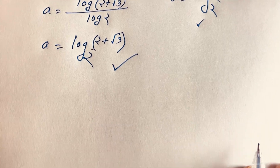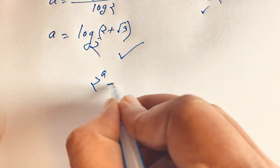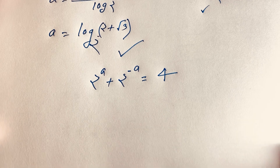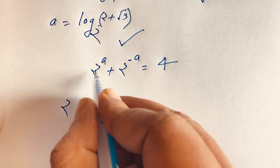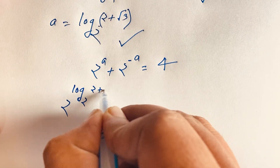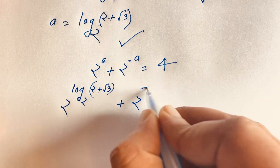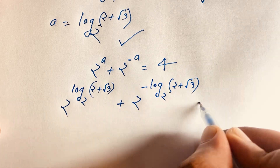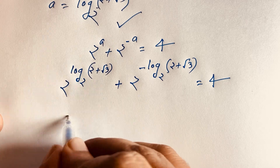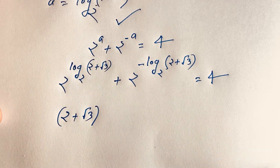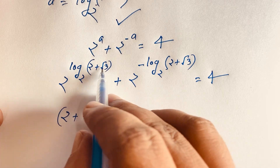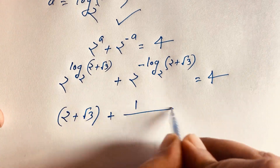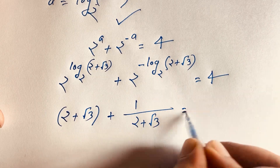Let's verify our answer. The question is 2^a + 2^(−a) = 4. Substituting a = log base 2 of (2 + √3), we get 2^a = 2 + √3 and 2^(−a) = 1/(2 + √3). So the left-hand side becomes (2 + √3) + 1/(2 + √3).